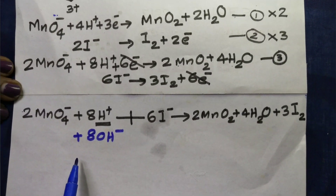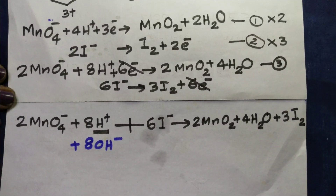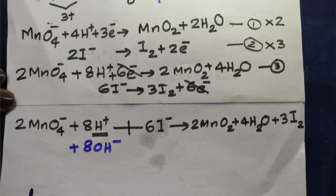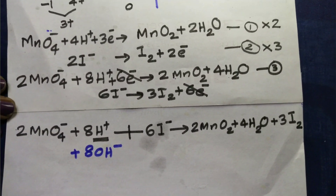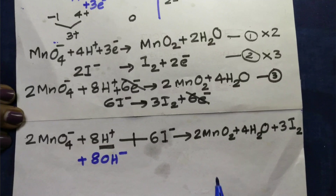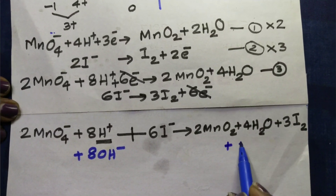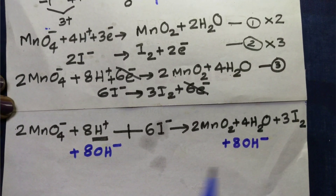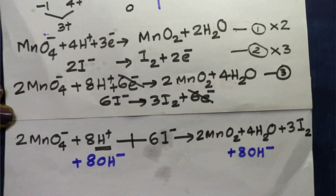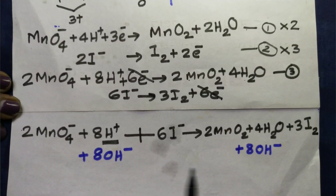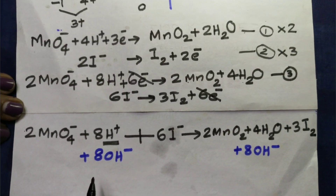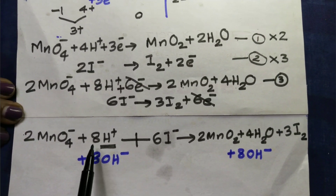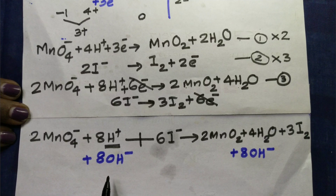So we will do this. This equation is being balanced. We will balance two things here. We add 8OH⁻ on both sides: 8H⁺ minus 8OH⁻, giving us 8H₂O. Now 8H⁺ plus OH⁻ on the other side.